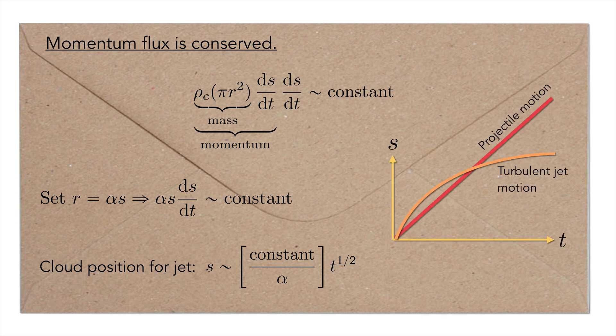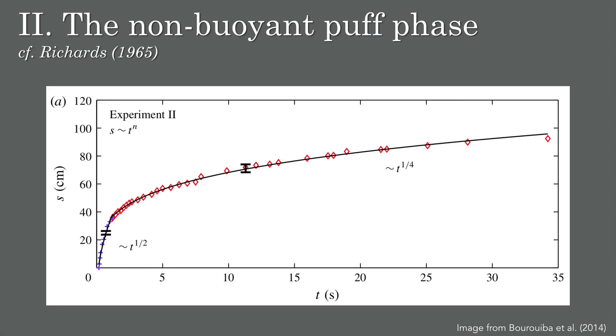If you were to imagine this on the graph of distance versus time, it would tell you that in this initial jet phase, the sneeze payload moves slower than non-turbulent projectile motion, which is like throwing a ball.